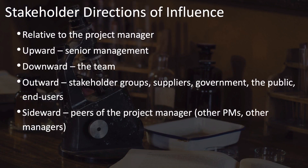What about these directions of influence? The directions are measured relative to you as the project manager. The upward direction is everyone above you in the organization — senior management. Downward from you is everyone on the project team. Outward are stakeholder groups and suppliers, including government, the public, and end users affected by the project. Sideward are stakeholders who are your peers — other project managers and functional managers. These sideward stakeholders are important not only because they can provide valuable insights, information, help, and resources, but also because they can compete for the scarce project resources that you need.